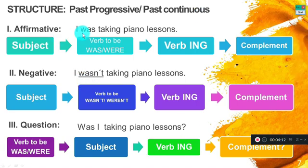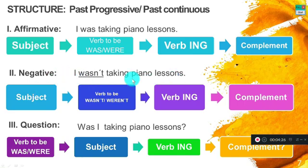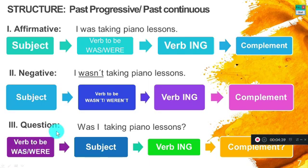For example: 'I was taking piano lessons.' Here, 'I' is the subject, 'was' is the verb to be, 'taking' is the verb with -ing, and 'piano lessons' is the complement. Negative: 'I wasn't taking piano lessons.' Question form: 'Was I taking piano lessons?' — where 'was' changes place with the subject, and we add a question mark.